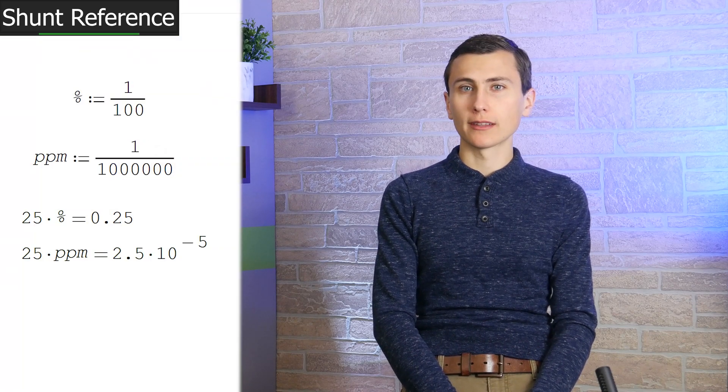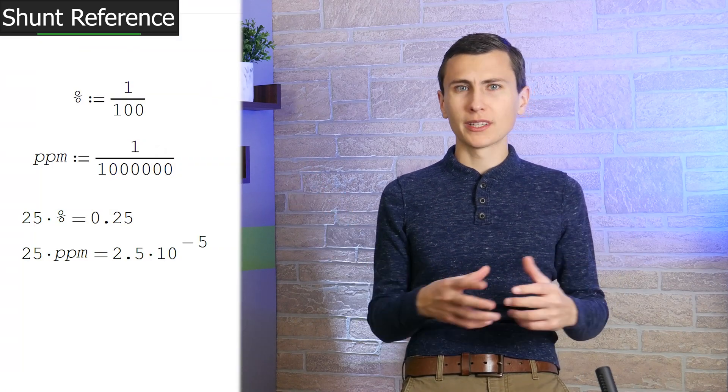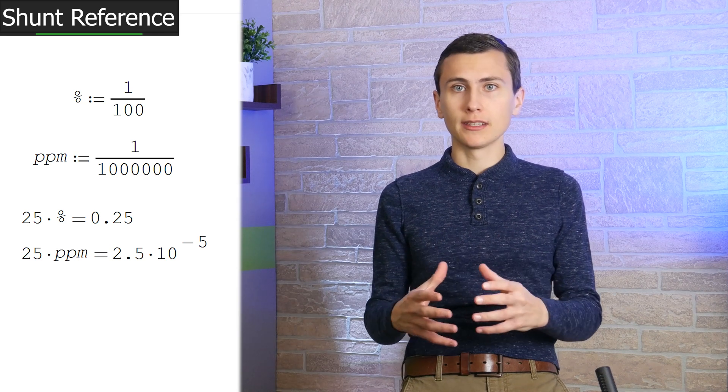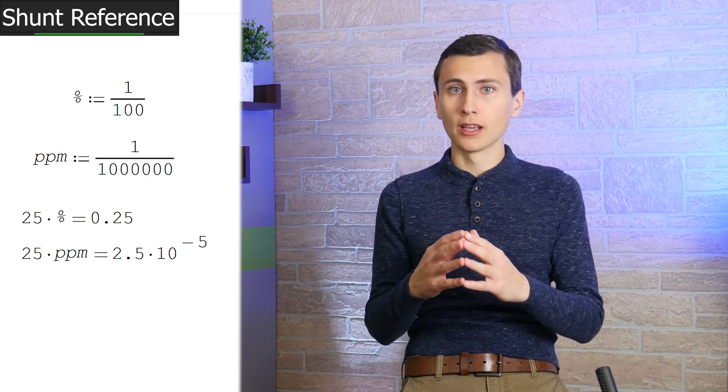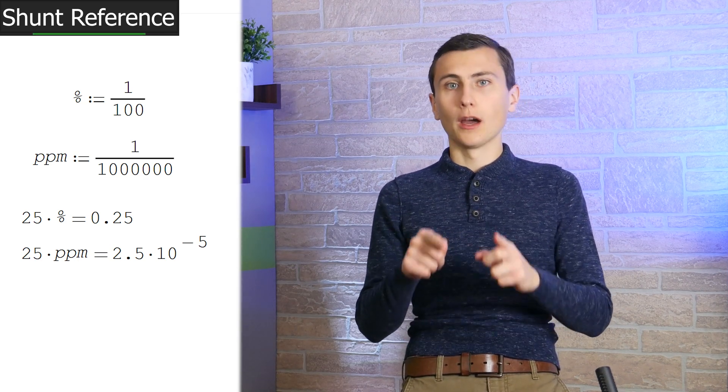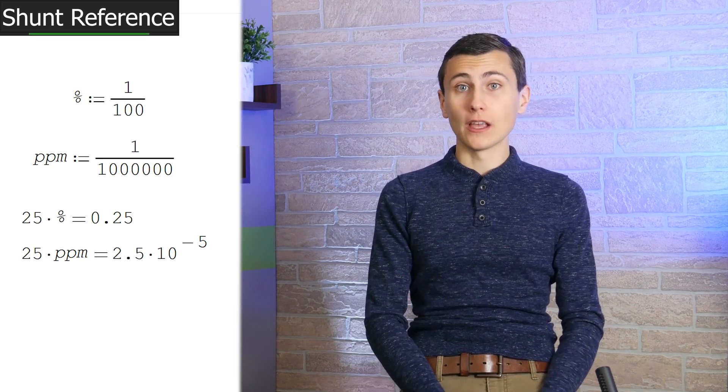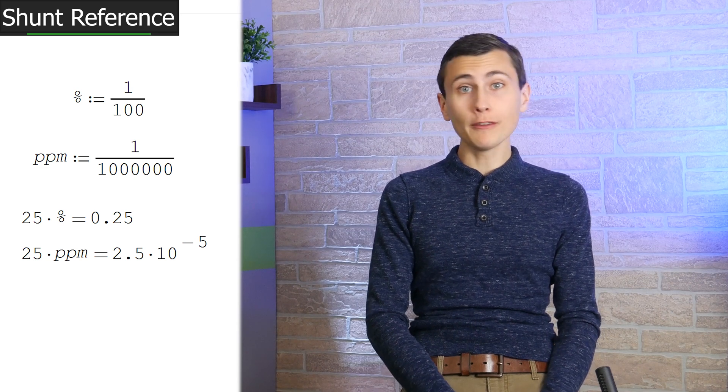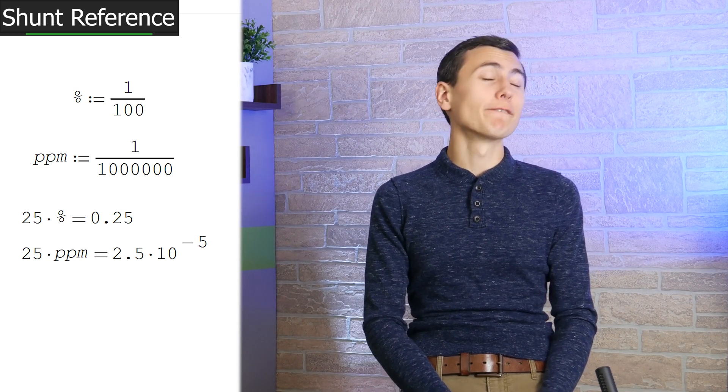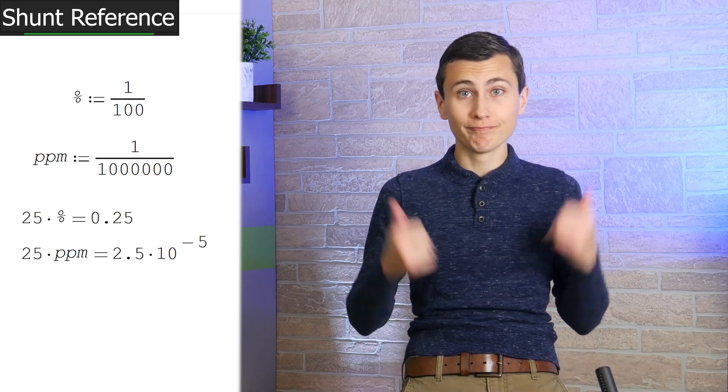For those not familiar with parts per million, or ppm, this is the same general concept as percent, but it's 1 divided by 1 million instead of 1 divided by 100. Or, it's a percent of a percent of a percent. Basically, 1 ppm is a very small change, and 15 ppm is also a very small change. That's good.